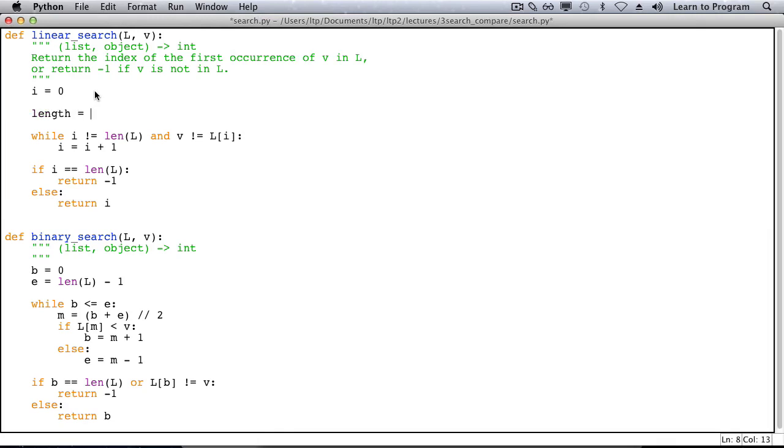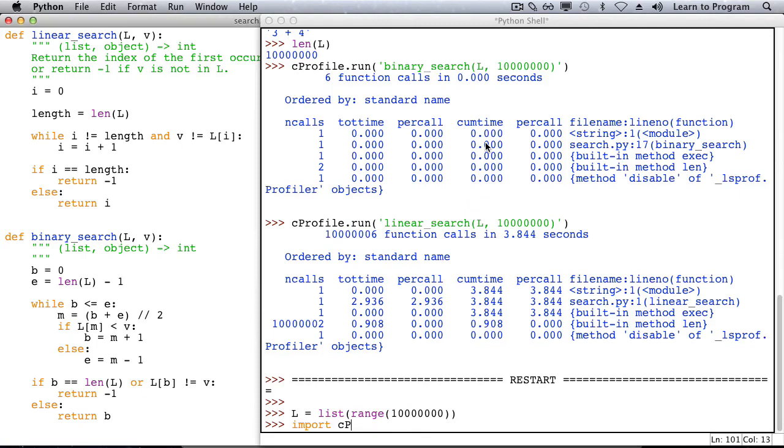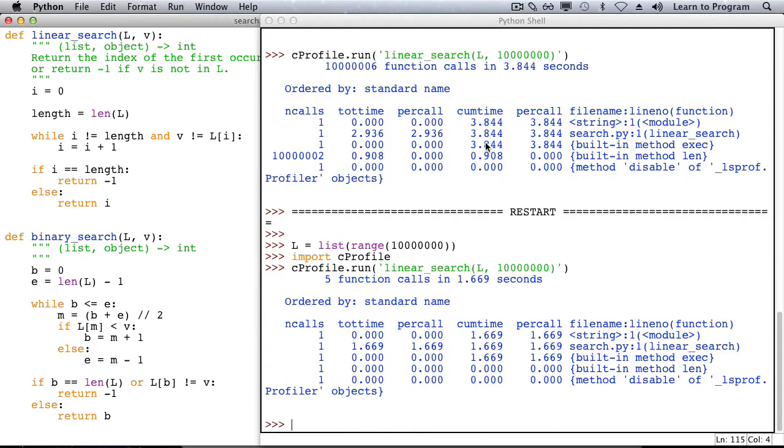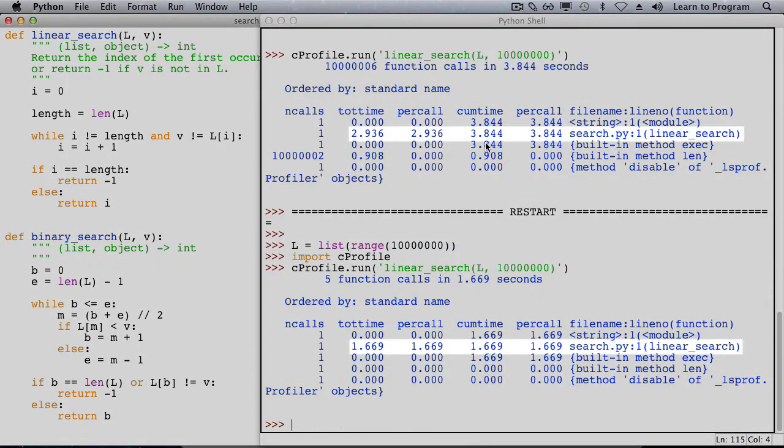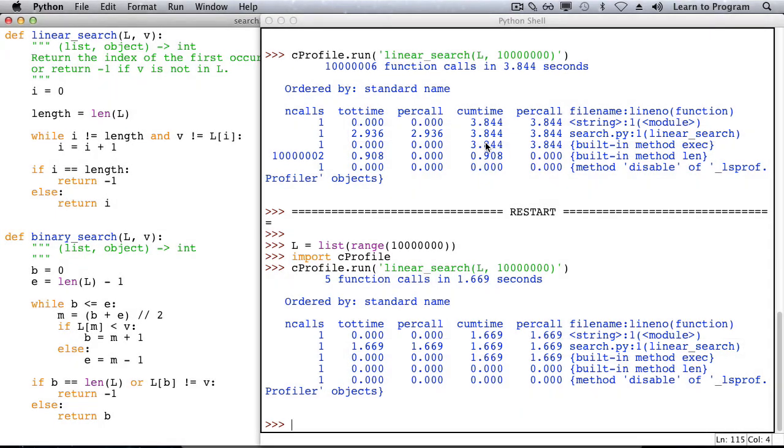Let's call len on L outside of the while loop and then use variable length everywhere instead of the call on len. When we run this again and profile it, we see that we went from nearly three seconds for linear search down to just over one and a half. That's a remarkable speed up. However, that doesn't even come close to how fast binary search is.